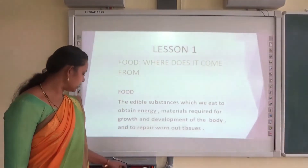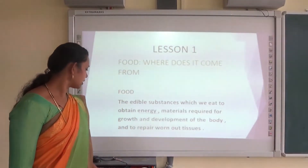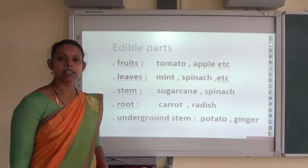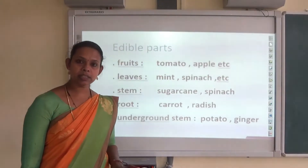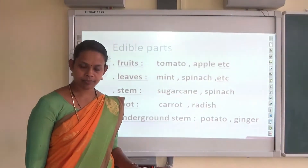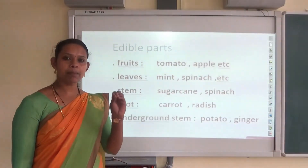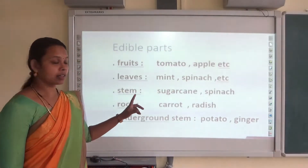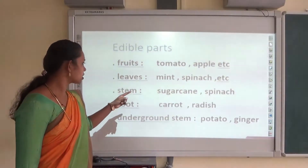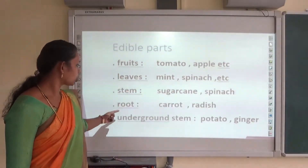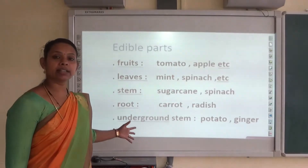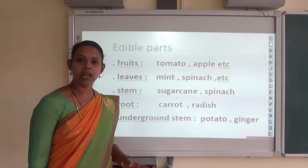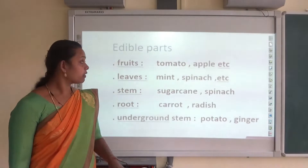What do you mean by edible substances? Edible substances means the substances that we can eat. In some cases, different parts like fruits, leaves, stem, roots, underground stem and so on are edible.